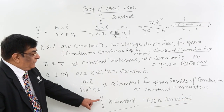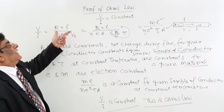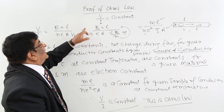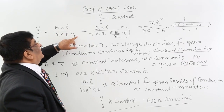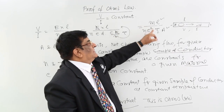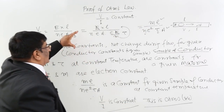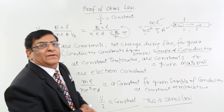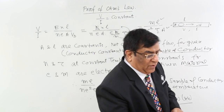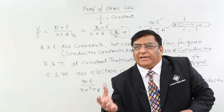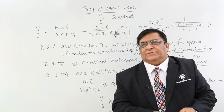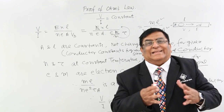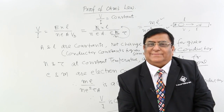So what have we proved? V upon I is a constant, and that is what Ohm said — that V upon I is a constant. We have taken help of these microscopic characteristics. This is how you will write the proof of Ohm's law. In the next topic, we will come back to the relations of resistance and details of resistance. Thank you.